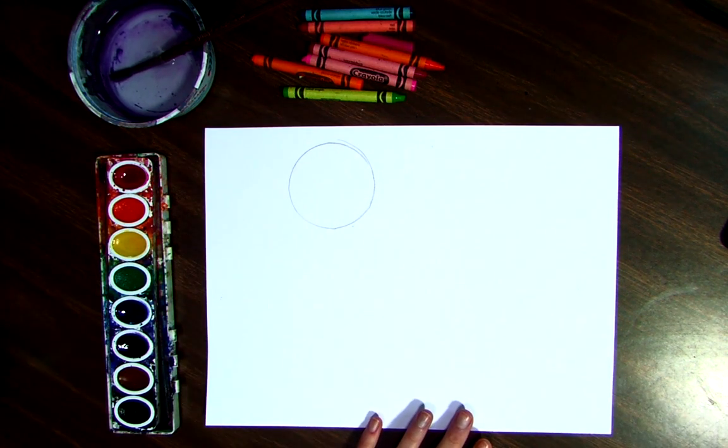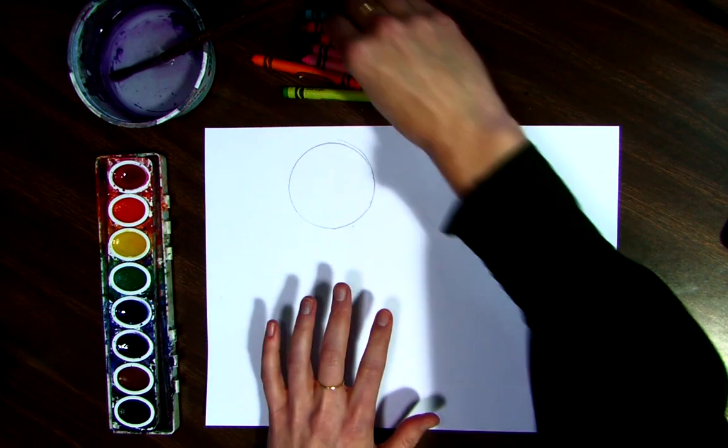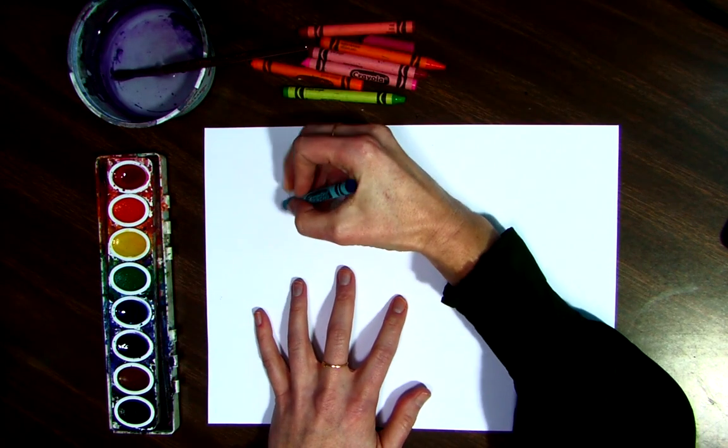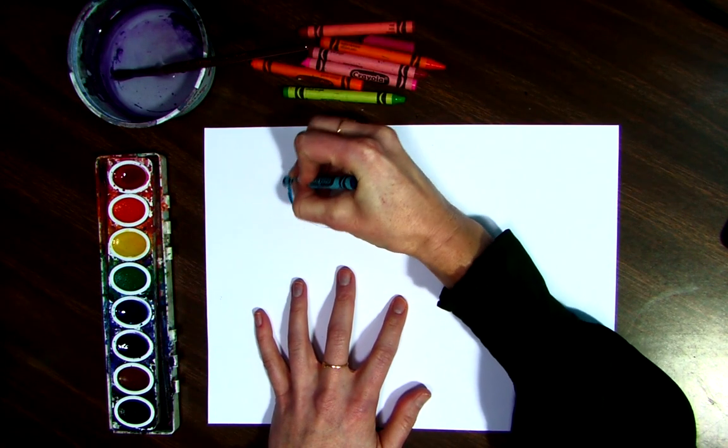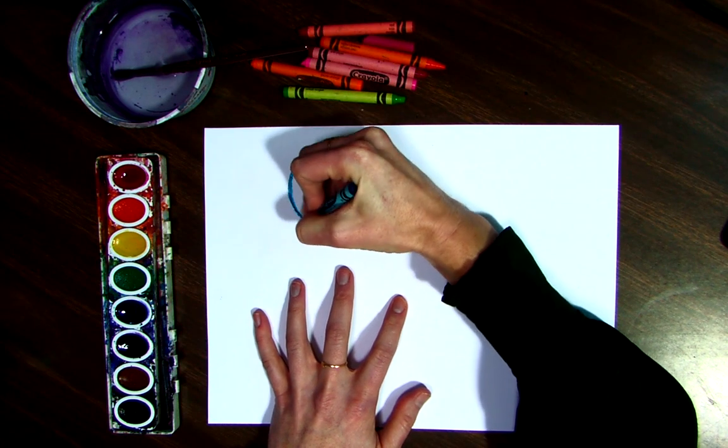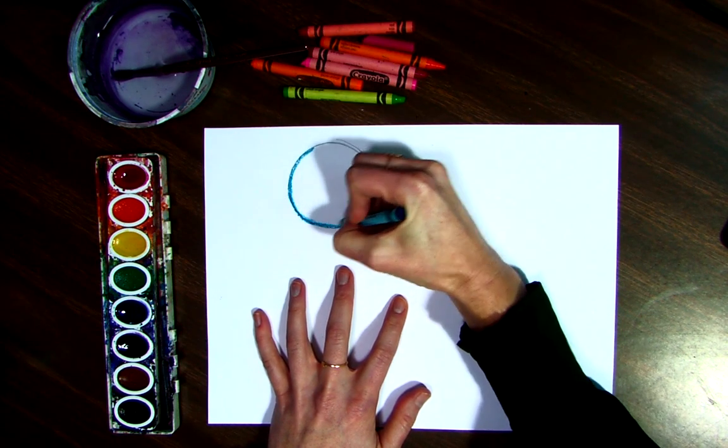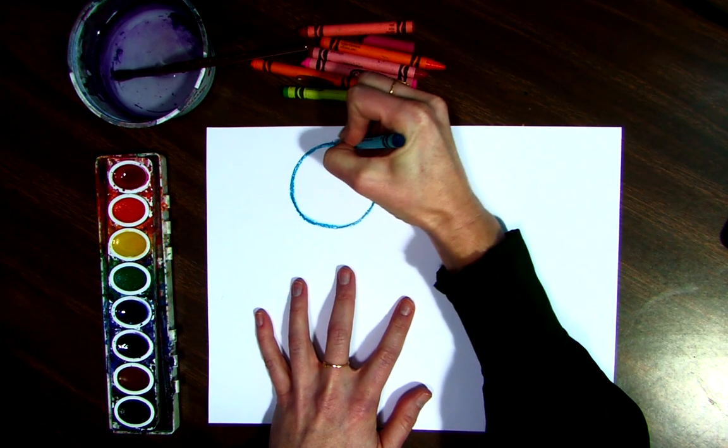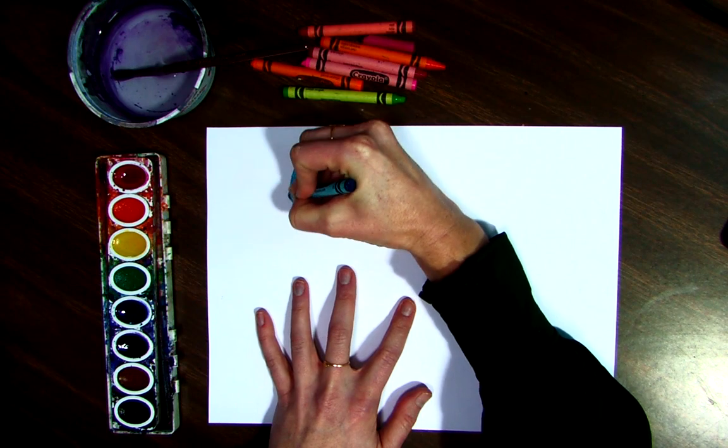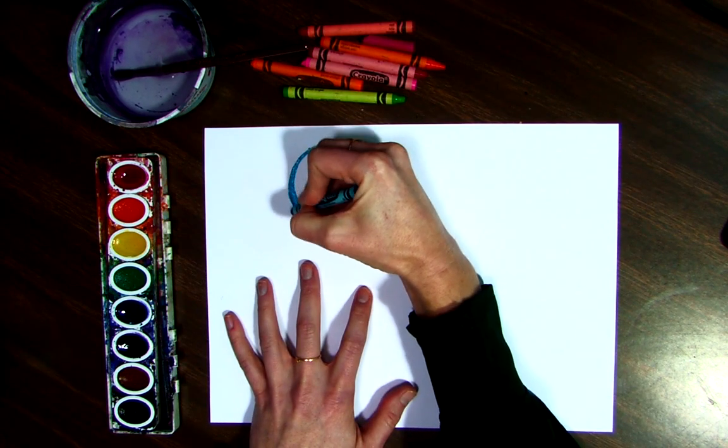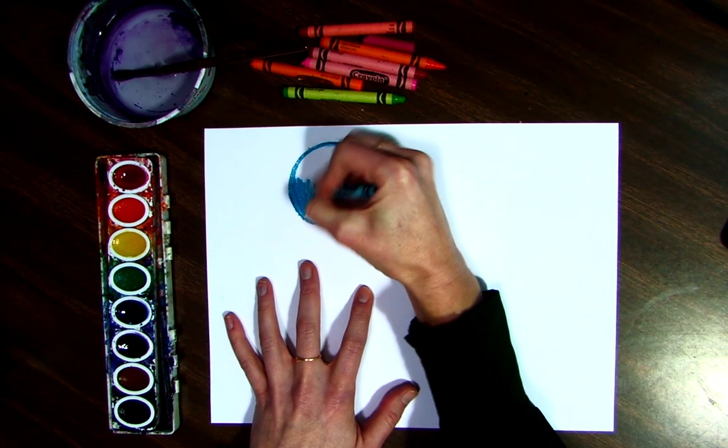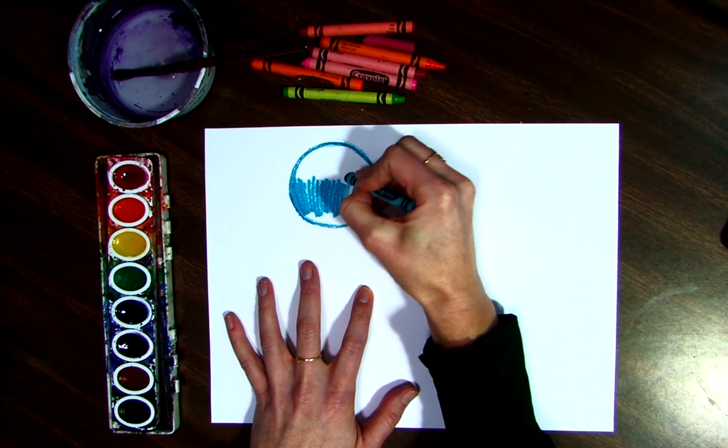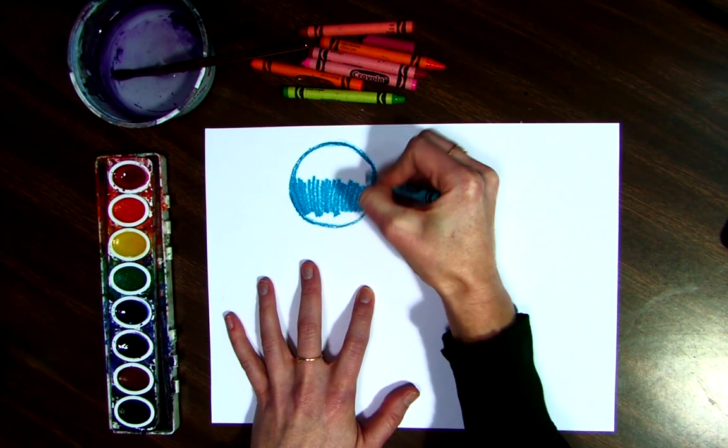I'm going to decide what color I want to color it. I think I'm going to start with the color blue. And so I am going to color in my circle with the crayons. Now, again, if you want to start painting this, you can. I like to use my crayons first and then use my paint because when I paint over top of the crayon, you'll still be able to see it, and I'll show you what that looks like.